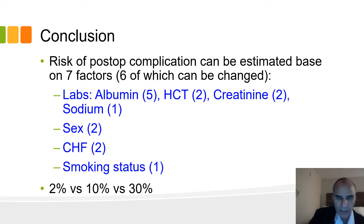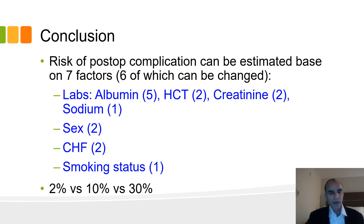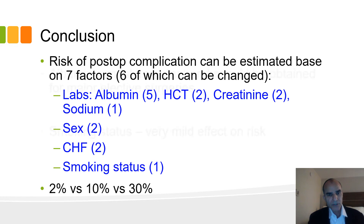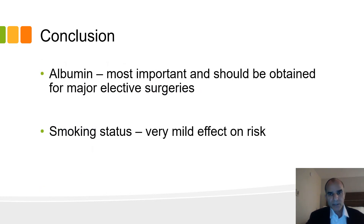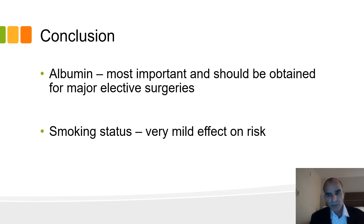Most of the factors are lab-related: albumin, hematocrit, creatinine, and sodium. Sex, which we can't change, is worth 2 points; congestive heart failure, 2 points; smoking status, interestingly, was the lowest with only a weighting of 1. The relative risk is 2% versus 10% versus 30%. Albumin is the most important and should be obtained preoperatively for most elective surgeries. Smoking status seemed to have a very mild effect on risk — that might be important for non-union of bone, but for perioperative complications in the first 30 days, it's a very small risk.